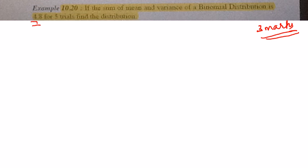The sum is given as 4.8 for five trials. So you know that the mean formula is np and variance formula is npq for a binomial distribution. The sum of these two is given as 4.8, and they have given the value of n as five.